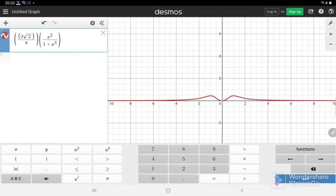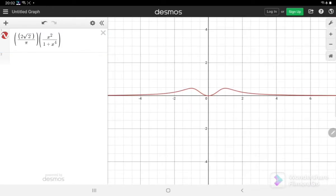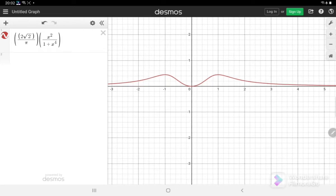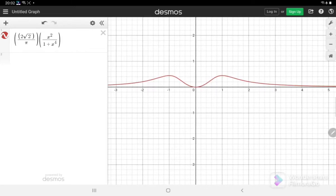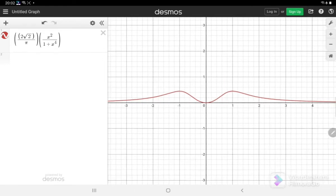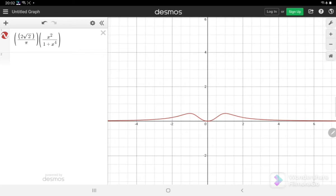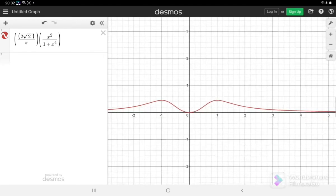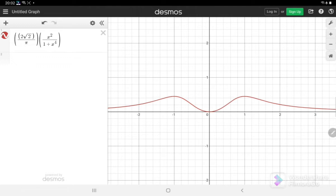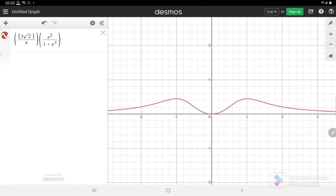You can find that this probability density becomes maximum at plus 1 and minus 1. So we have found these values during our calculation, and you can also see that at x = 0, the probability density is 0.